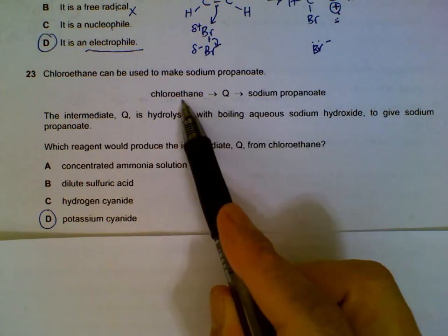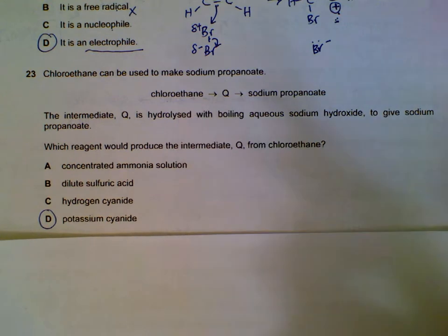This is what we call the step-up reaction. Chloroethane is a halogen alkane. Stepping up of halogen alkanes, adding carbons to halogen alkanes, requires either using potassium cyanide or sodium cyanide.